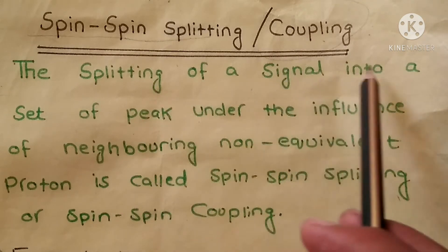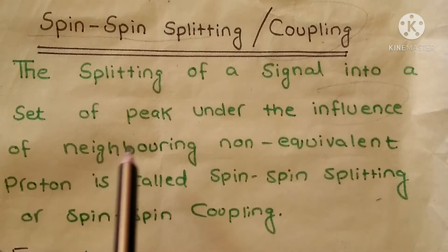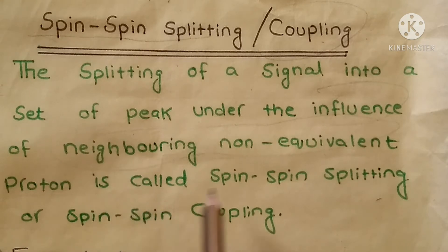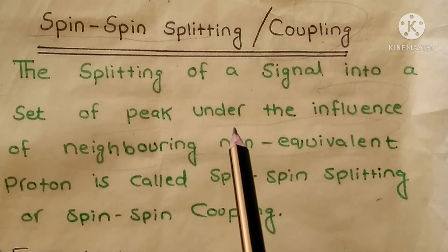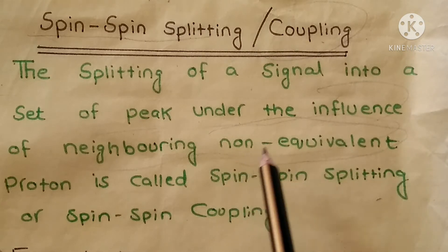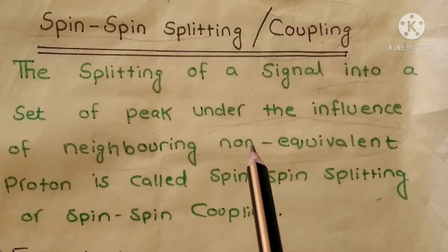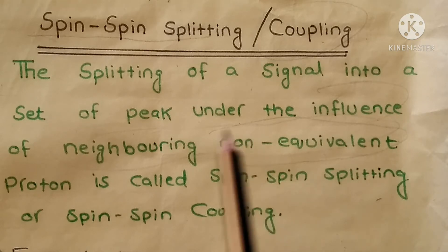The splitting of a signal into a set of peaks under the influence of a neighboring non-equivalent proton is called spin-spin splitting or spin-spin coupling. What is meant by non-equivalent proton? We discussed non-equivalent and equivalent protons in the previous lecture, but here you can remember that a non-equivalent proton is a proton which has a different environment.